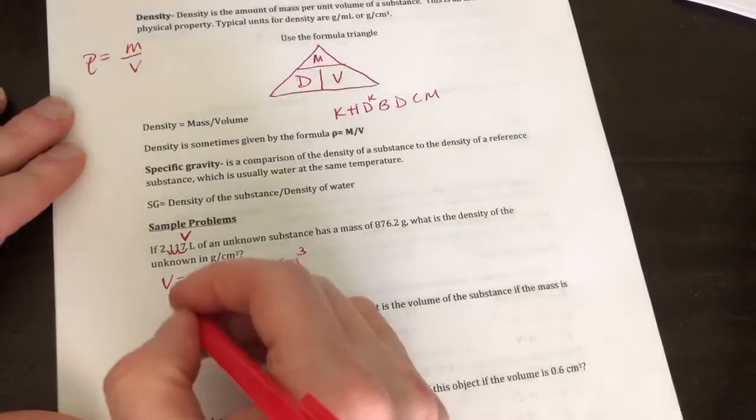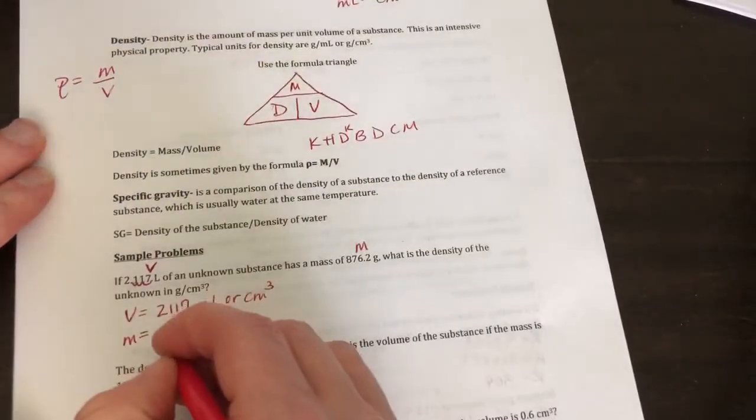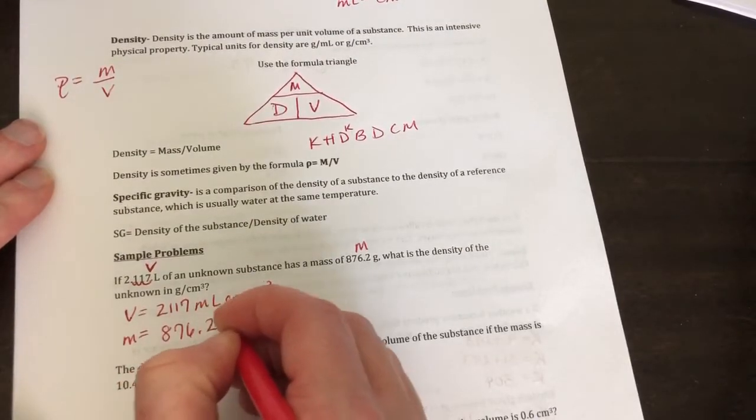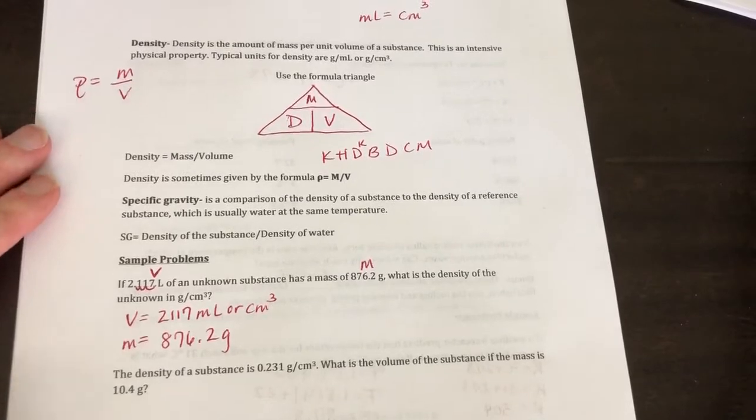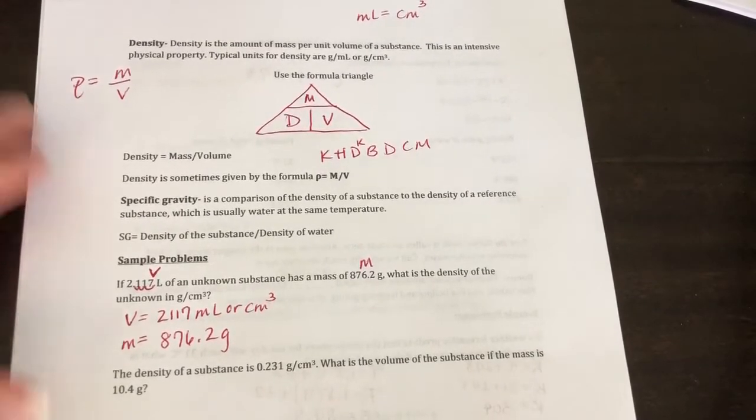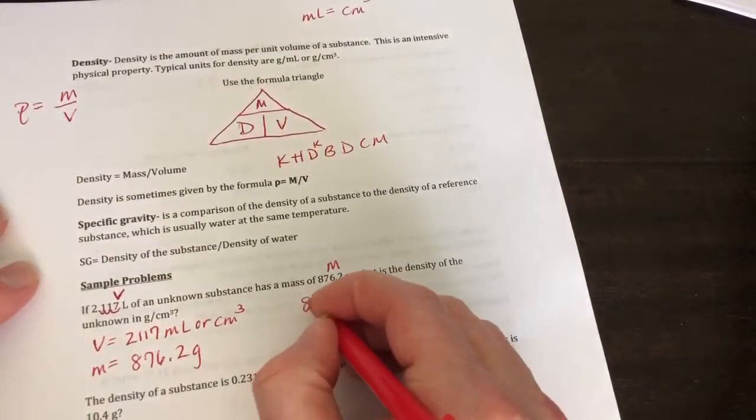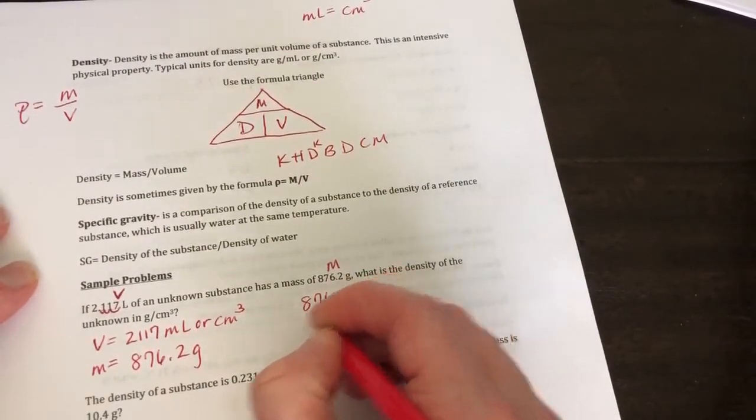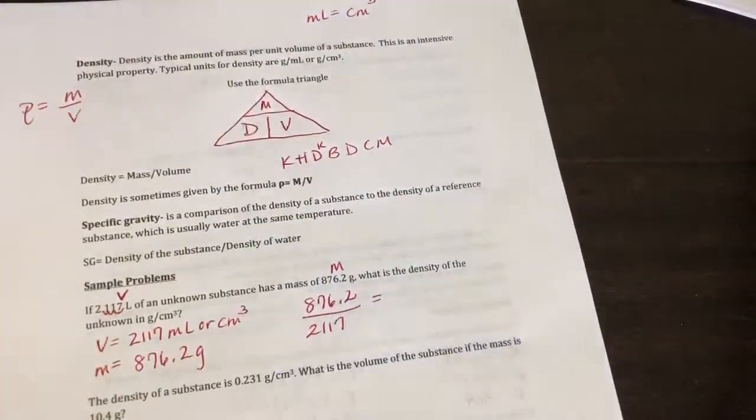So our volume is equal to 2,117 milliliters or centimeters cubed because they're the same thing. Okay, our mass is given in grams. It's 876.2. And if I'm looking for density, what is the density? Whatever follows the question word is what I'm looking for. So density is mass over volume. So we're just going to do 876.2 divided by 2,117.